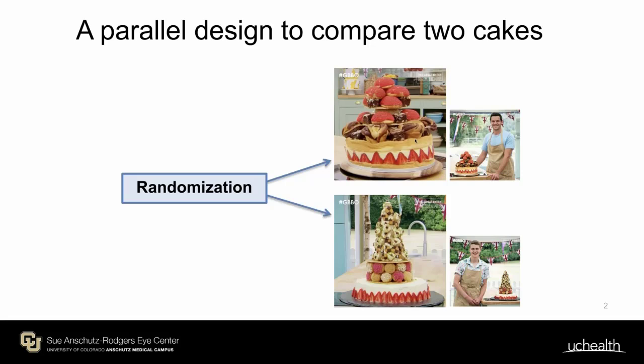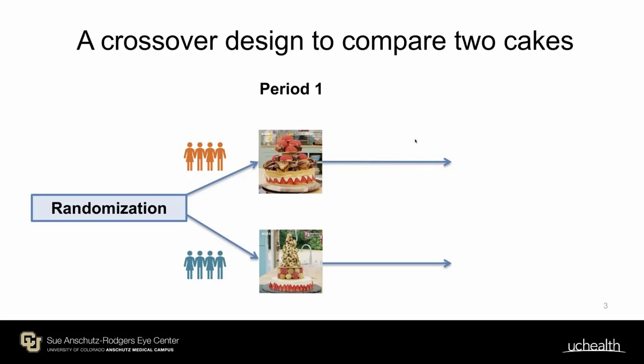If you were to design a randomized control trial using a parallel design to compare two cakes — and I hope some of you are fans of the bake-off — you would randomize participants, half of them to taste the cake made by Dave, the other half tasting the cake made by Peter. However, if you were like me, you would rather try both cakes. And in that way, we can use a crossover design.